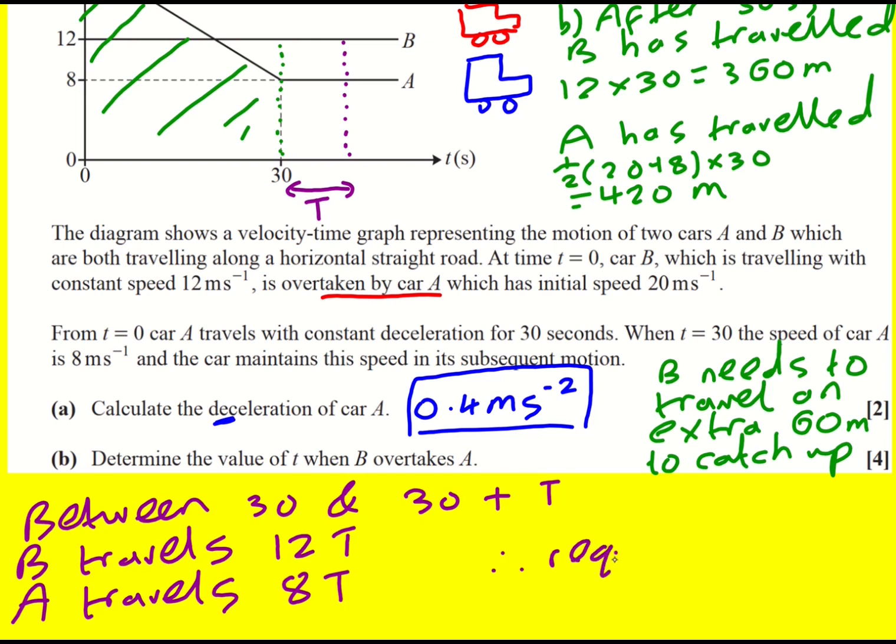Therefore, we require that this 12T, the distance that B has traveled, equals 8T, the distance that A has traveled, plus that extra 60 to catch up. And that gives us an equation we can solve to work out the extra time taken for B to catch up. So 4T equals 60, and T equals 15.